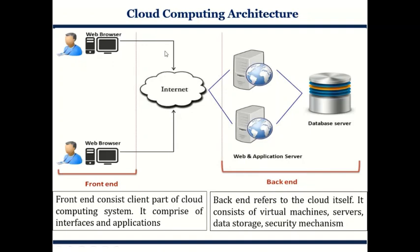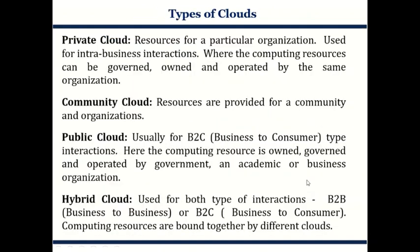Now let's understand the architecture of cloud computing. Basically there is a front end and a back end. The front end is the user side, or client side, which comprises the interface and the application towards the cloud, accessed through the internet. The back end refers to the actual cloud — that is where the software and data are stored in the database of a web application server. The back end consists of virtual machines, servers, storage facilities, and security mechanisms.